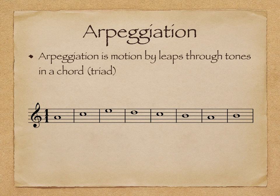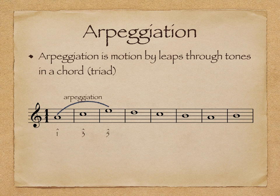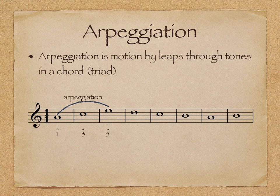A third type of motion is arpeggiation — motion by leaps through the tones in a chord, specifically a triad, which can be major or minor. In our example below, the first three tones outline an A minor triad, which also happens to be scale degrees 1, 3, and 5 in the key of this example. Arpeggiations can be ascending or descending. They do not have to start on scale degree 1, but can begin on any of the three scale degrees. As long as the arpeggiation goes through all three tones in the triad, it can be considered an arpeggiation.